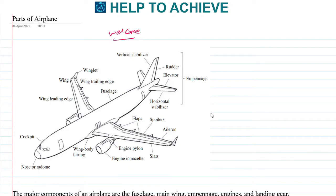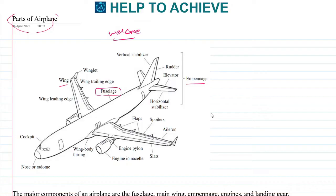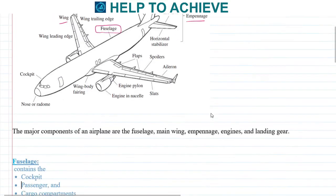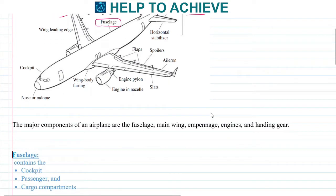Hello guys, welcome to today's video. Today we'll be discussing some of the major components of a plane, or the parts of an aircraft. Some of the important components of the aircraft are the fuselage, the empennage, the landing gear, the cockpit, and the wings. We'll be discussing the functionality of each one of them in detail.